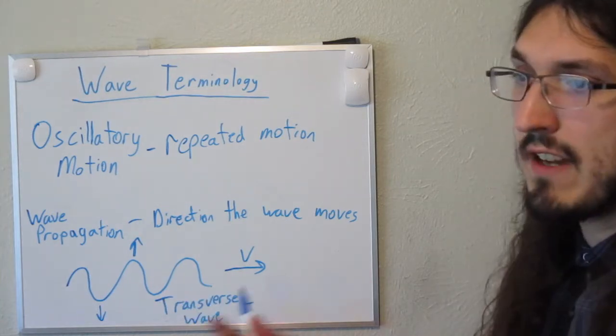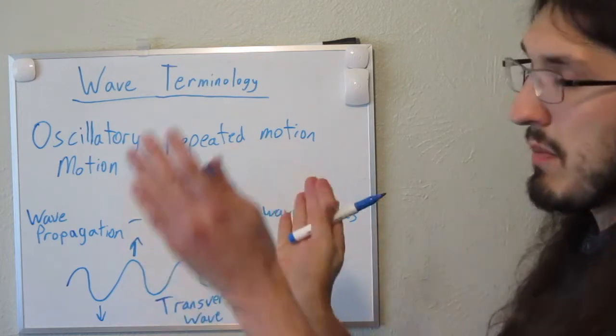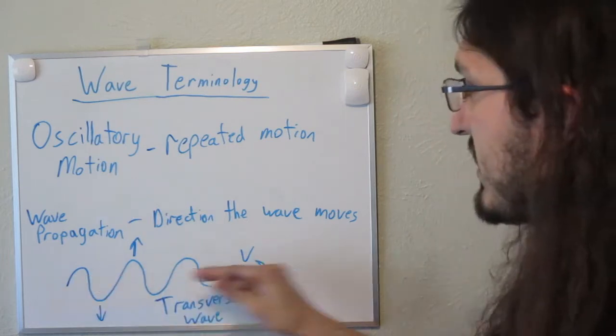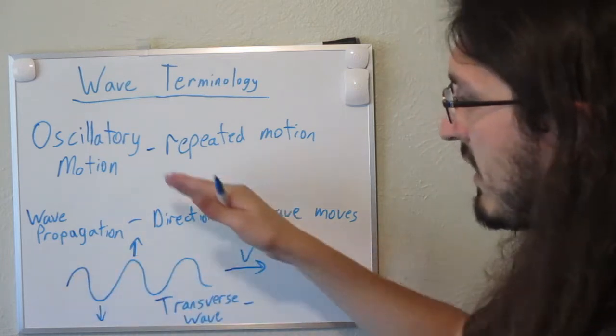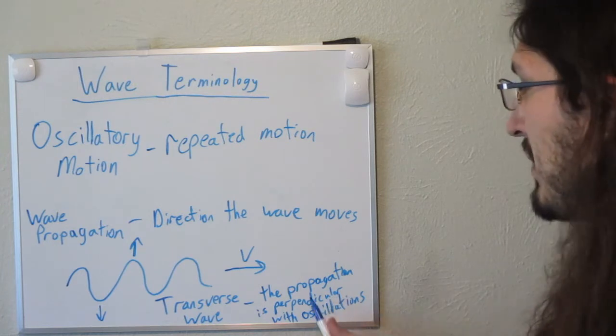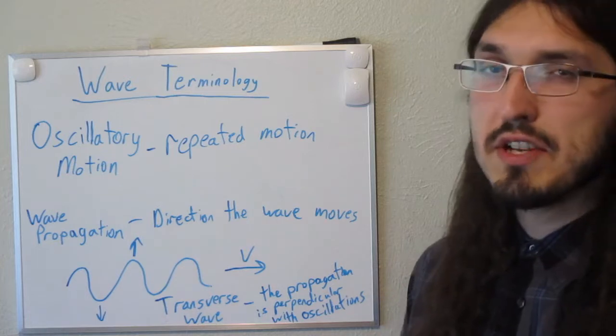Transverse waves can be defined as waves that have propagations and oscillations that are perpendicular. So they're like 90 degrees from each other. The propagation is left and right and the oscillations are up and down. So here's my definition for a transverse wave. The propagation is perpendicular with the oscillations.